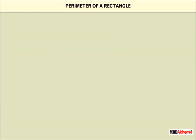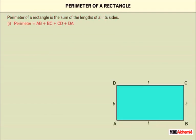Here we will discuss about perimeter of a rectangle. Perimeter of a rectangle is the sum of the lengths of all its sides. Perimeter is equal to AB plus BC plus CD plus DA equals to length plus breadth plus length plus breadth.